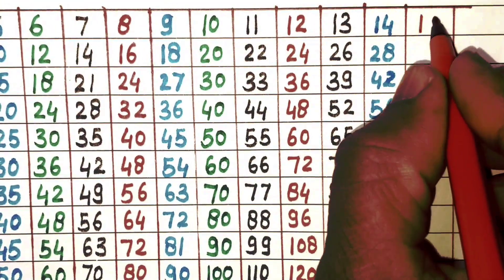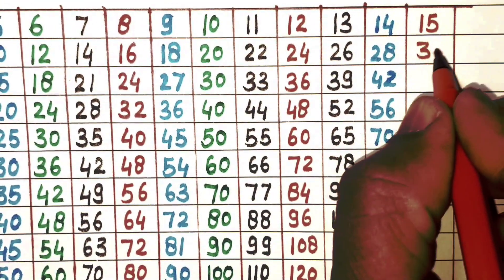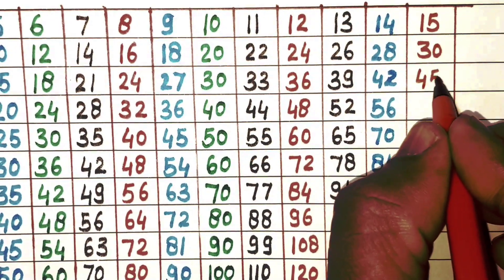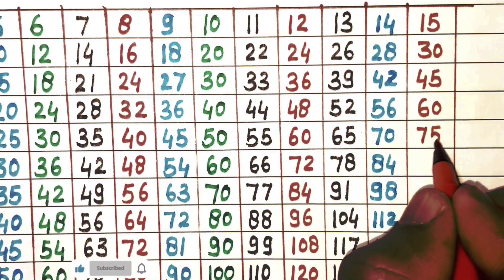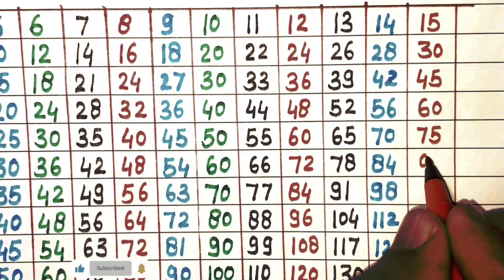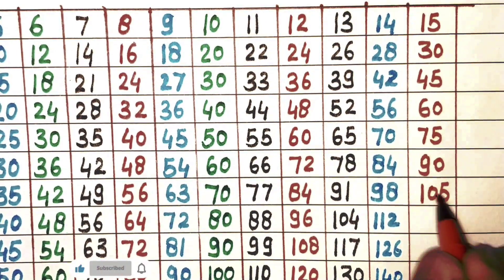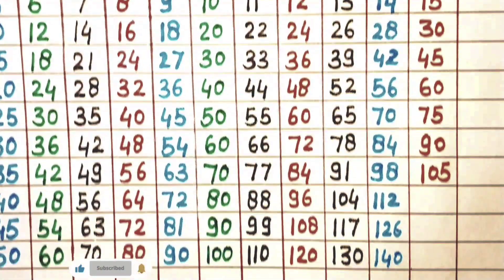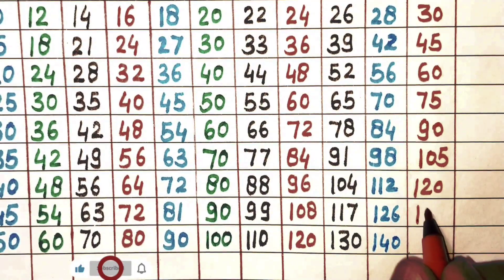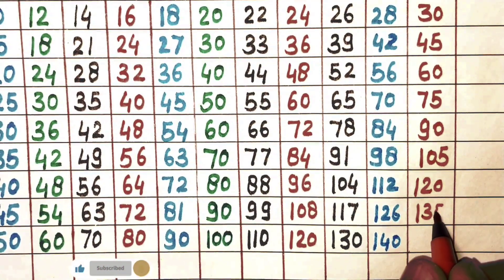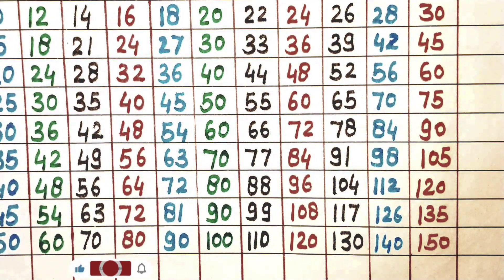Next 15. 15×1 is 15, 15×2 is 30, 15×3 is 45, 15×4 is 60, 15×5 is 75, 15×6 is 90, 15×7 is 105, 15×8 is 120, 15×9 is 135, 15×10 is 150.